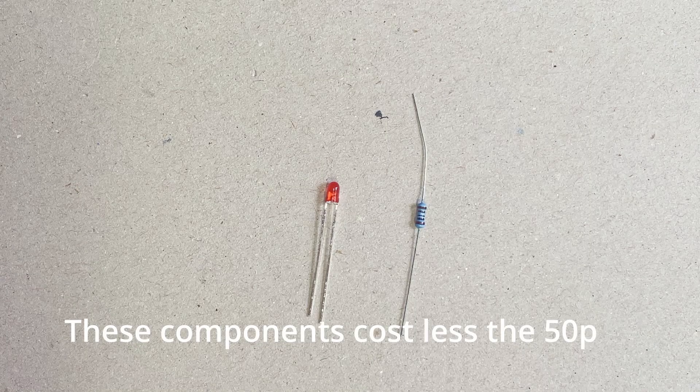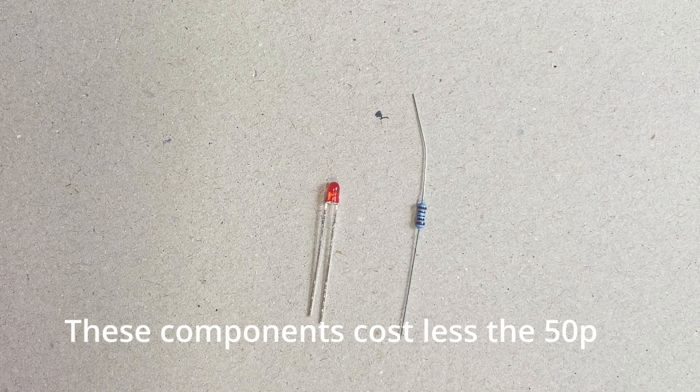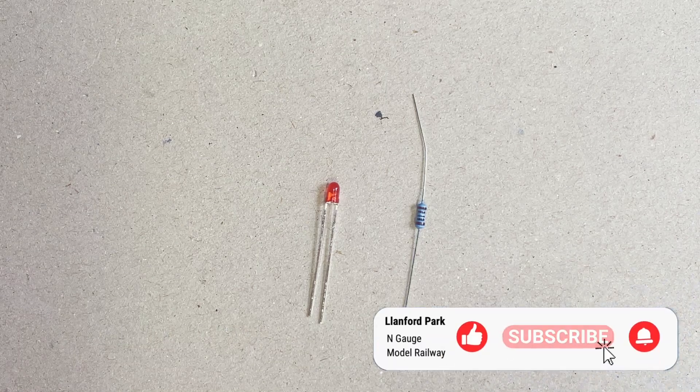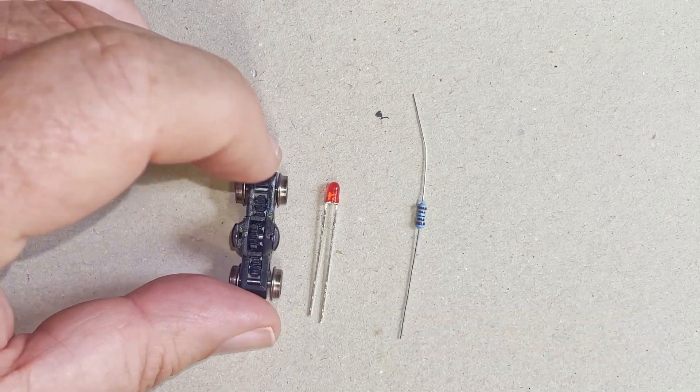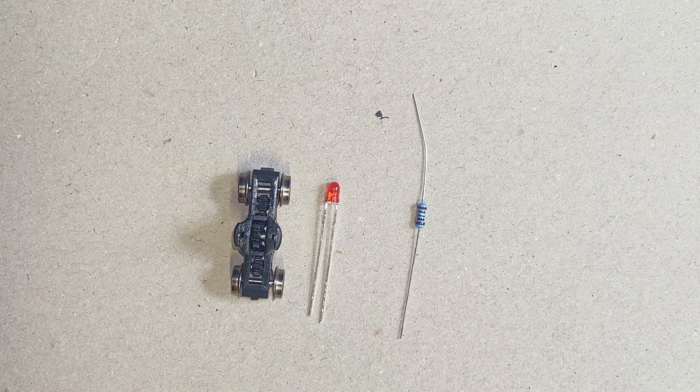Believe it or not, these are the only components you actually need to make a track tester: an LED and a 1000 ohm or 1k resistor. But today I'm going to mount this track tester into an old bogey.